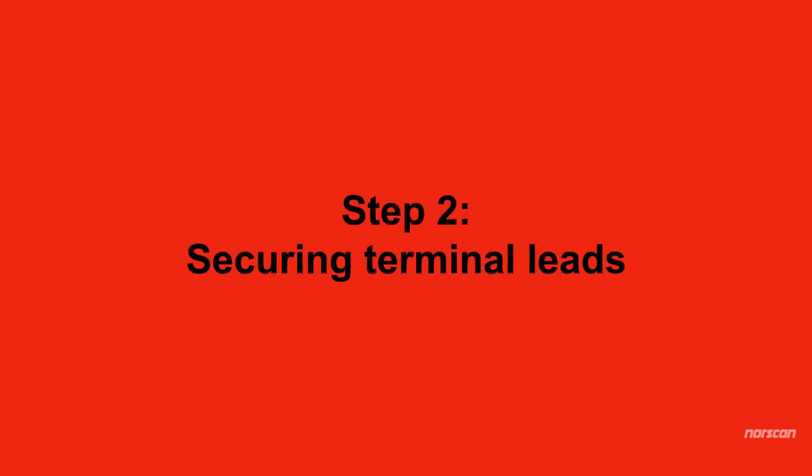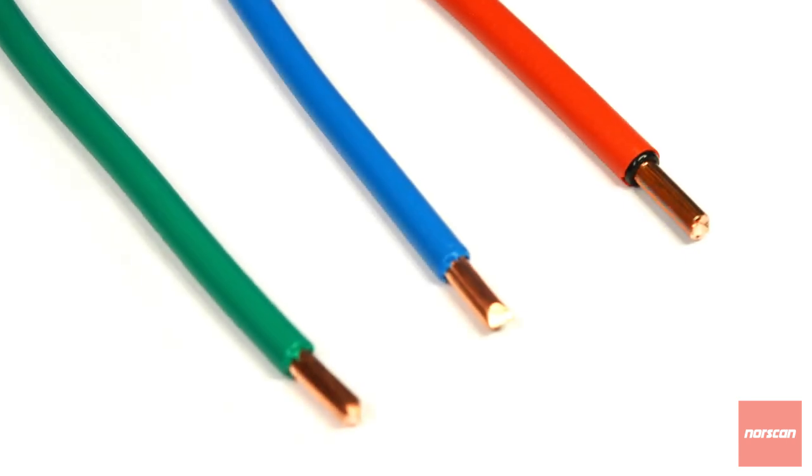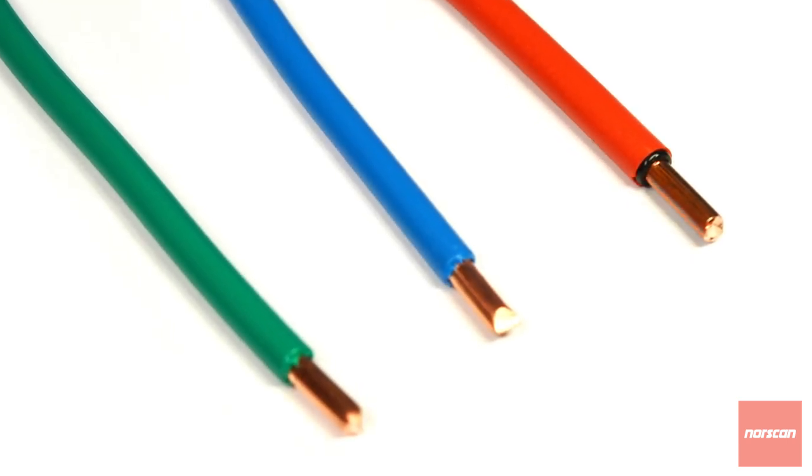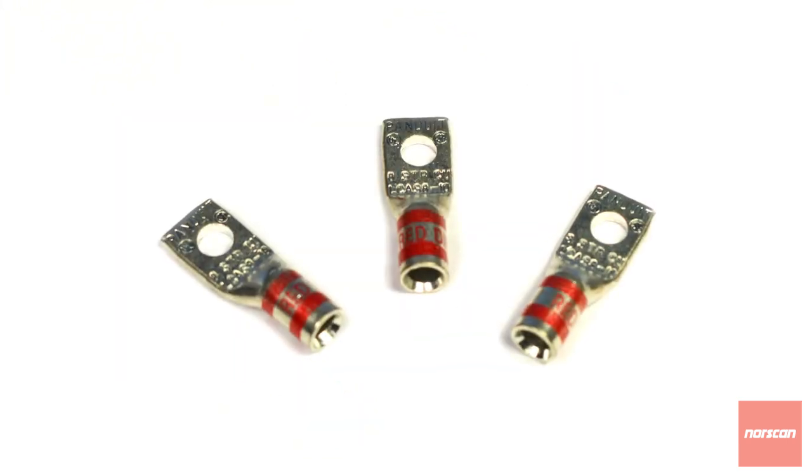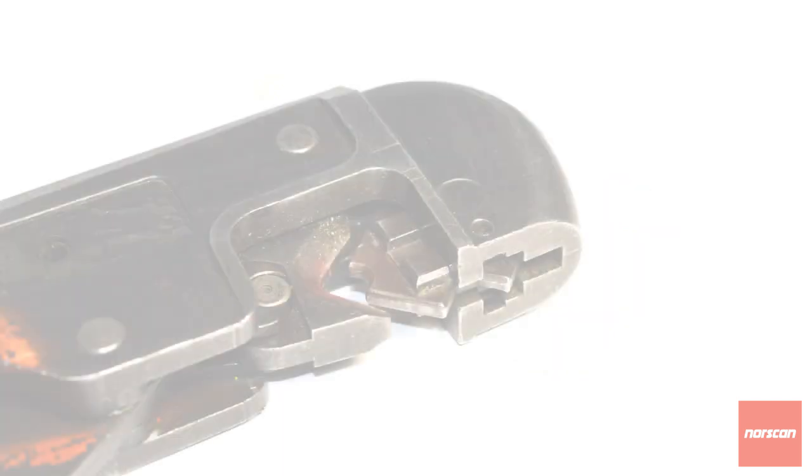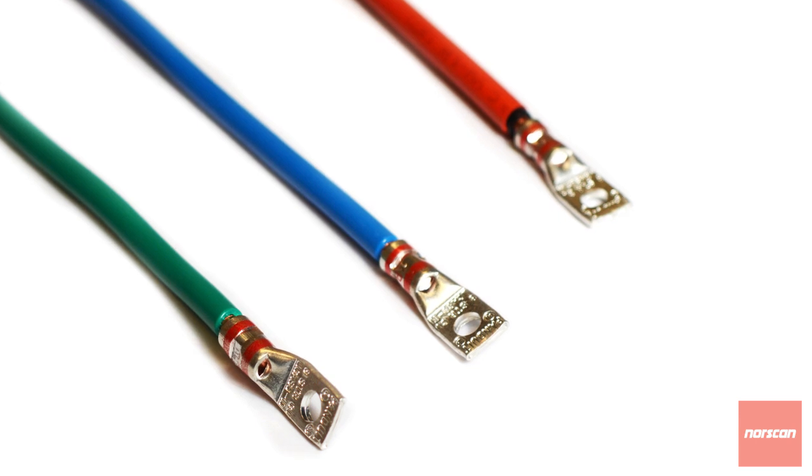Step 2: Securing Terminal Leads. Strip 5/8 to a half inch of insulation from each of the three leads. Insert one terminal lead onto each cable, then using a number 6 crimper, crimp the terminal connection securely.